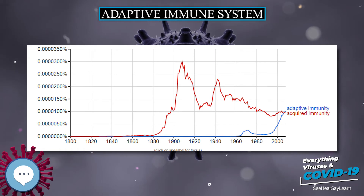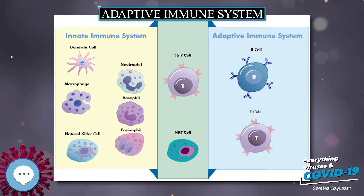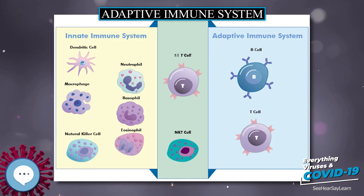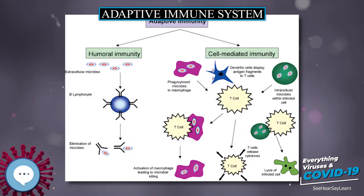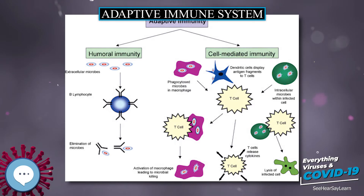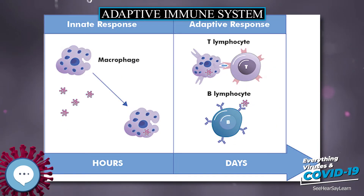The adaptive immune system, also known as the acquired immune system or, more rarely, as the specific immune system, is a subsystem of the overall immune system that is composed of highly specialized, systemic cells and processes that eliminate pathogens or prevent their growth.